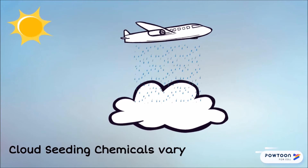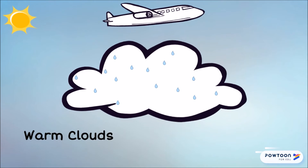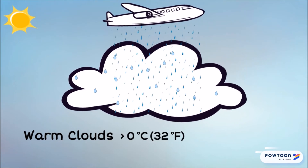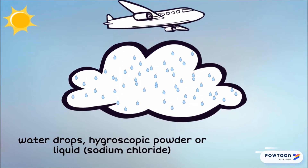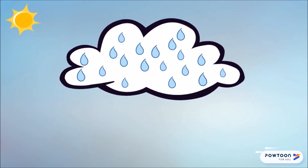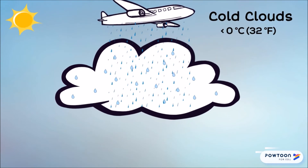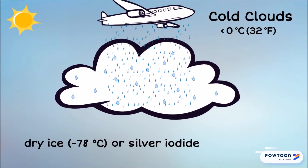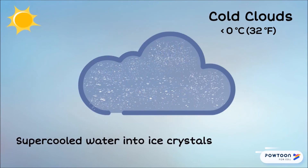Seeding chemicals vary according to the temperature of clouds. In warm clouds, where the temperature is near 32 Fahrenheit or 0 Celsius, spraying water drops or hygroscopic powder or liquids such as sodium chloride increases the chances of the water drops growing to finally become rain. While in cold clouds having temperatures below 32 Fahrenheit, adding dry ice or silver iodide solidifies super-cooled water droplets into ice crystals.